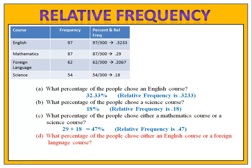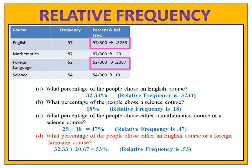What percentage of the people chose either an English course or a foreign language course? We look at English and foreign language and add them together. We find that about 53%, or 0.53 for the relative frequency, chose an English or a foreign language course.